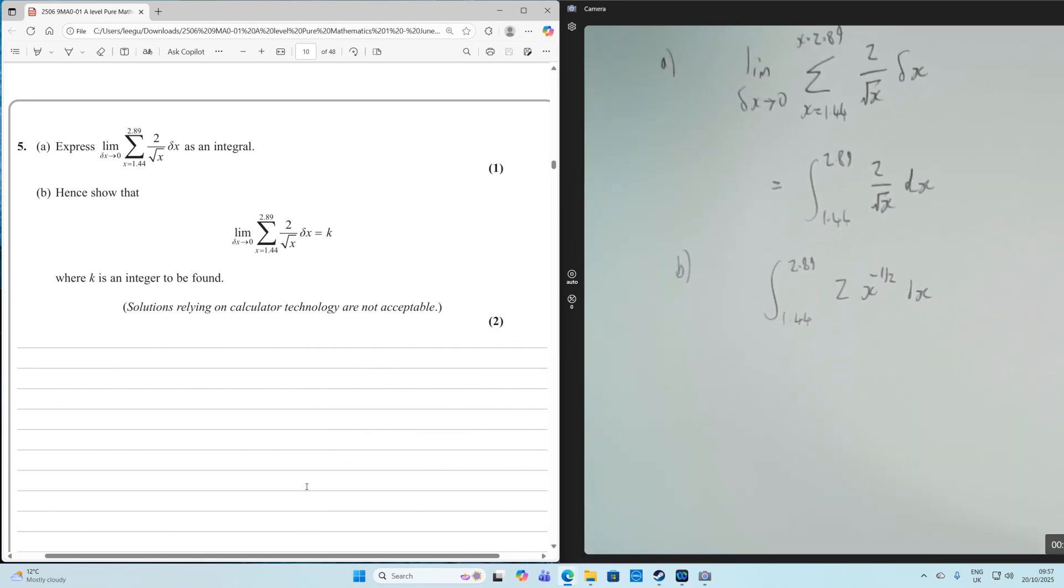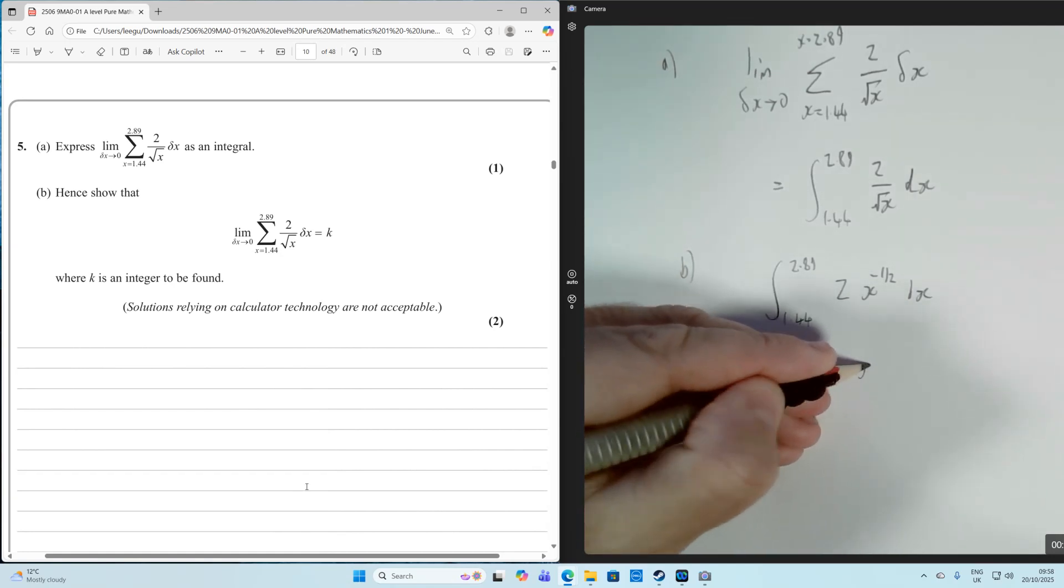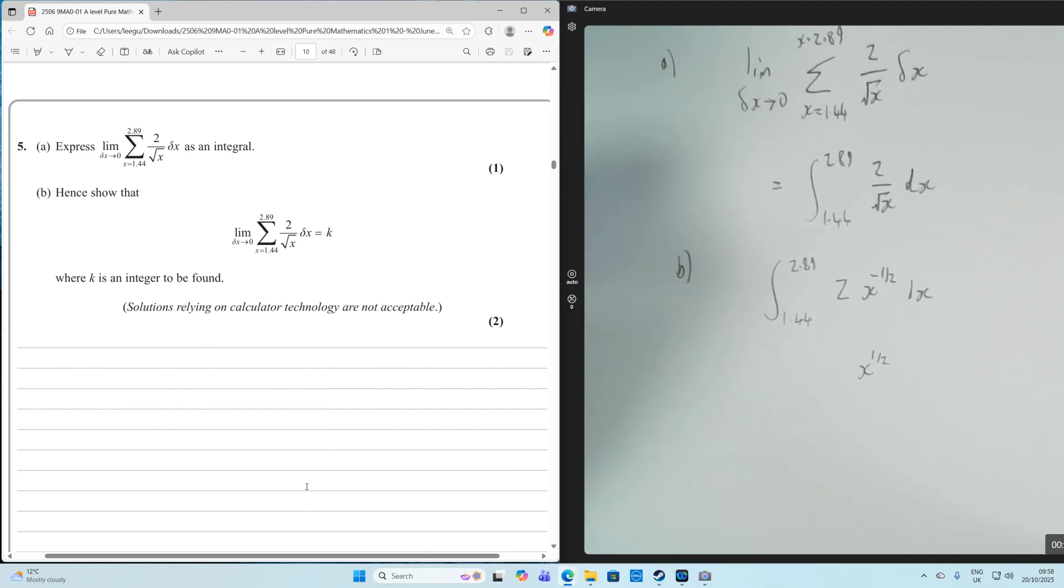Let's write it in a format where it's easier to see what's going on with the powers. So I've rewritten 2 over root x as 2x to the power of minus a half. And we're going to raise the power by 1 and divide by the new power. So when we raise the power by 1, minus a half add 1 goes to a half.